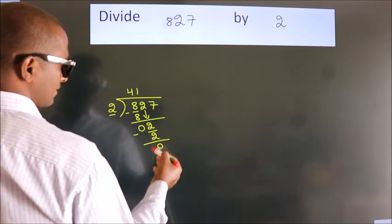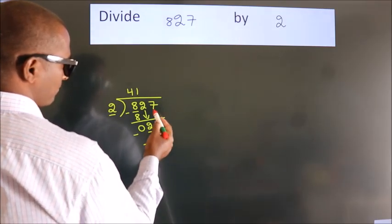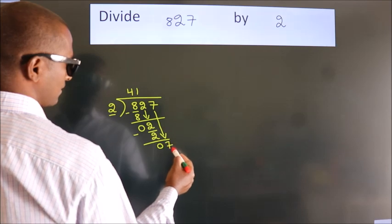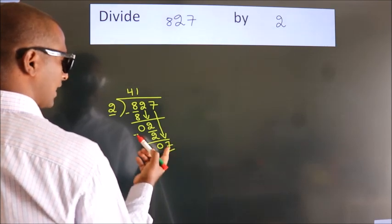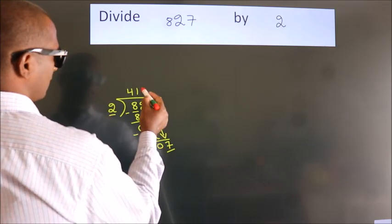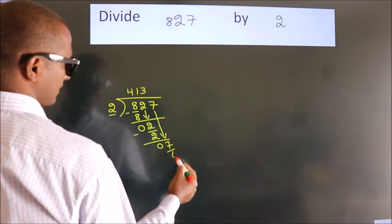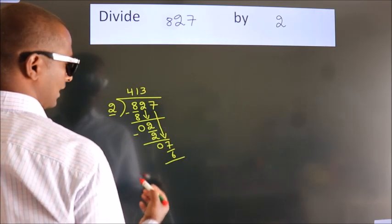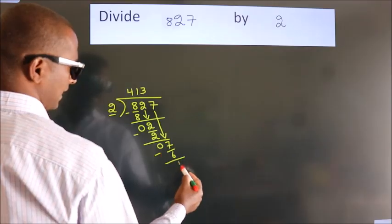After this, bring down the beside number. So 7 down, so 7. A number close to 7 in 2 table is 2 threes, 6. Now, we subtract. We get 1.